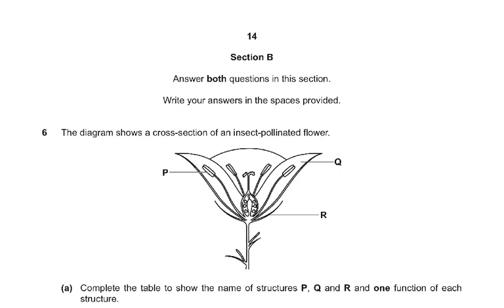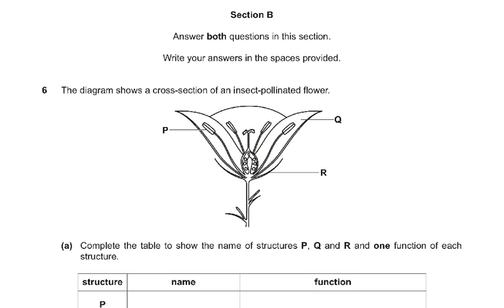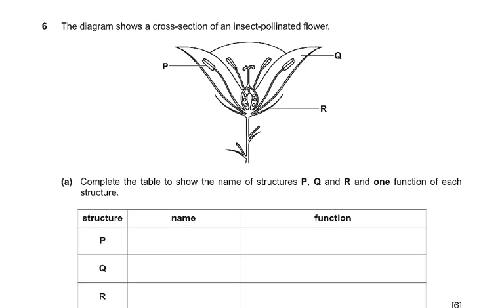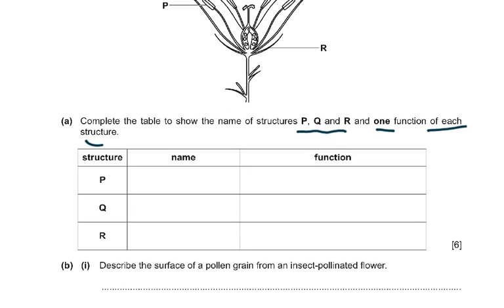Bismillahirrahmanirrahim. Section B: answer both questions in this section, write your answers in the spaces provided. The diagram shows a cross section of an insect-pollinated flower. You must look at it very carefully. What is P, what is Q, and what is R? Then complete the table to show the name of structures P, Q, and R, and one function of each. Look at the marks — it's for six marks, so be careful.